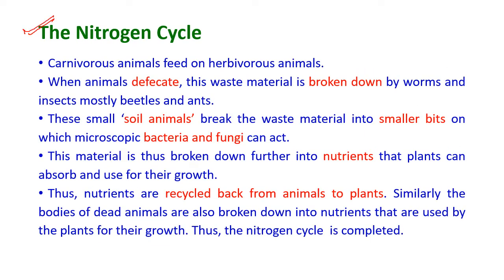The nitrogen cycle: carnivorous animals feed on herbivorous animals. When animals defecate, this waste material is broken down by worms, insects, beetles, and ants. These small soil animals break the waste material into further smaller bits on which microscopic bacteria and fungi can act. This material is then broken down further into nutrients that plants can absorb and use for growth.